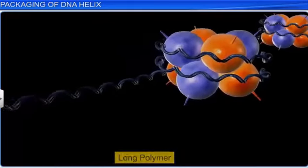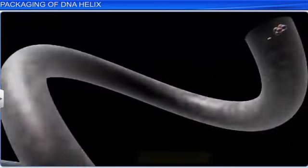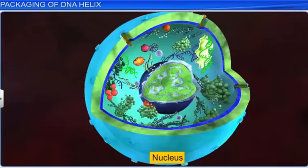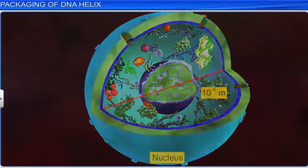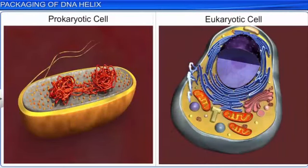Have you wondered how such a long polymer is packaged within a typical nucleus with a dimension of about 10⁻⁶ meters? To understand this, let us learn about the packaging of a DNA double helix, which is different for both prokaryotes and eukaryotes.